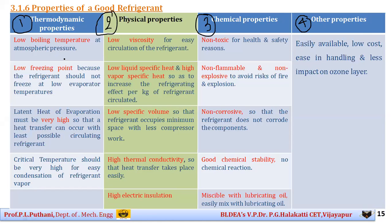When choosing a good refrigerant, you should see that its boiling point is as low as possible at atmospheric pressure. The boiling point of water at atmospheric pressure is 100°C, whereas the freezing point is 0°C. The boiling point of the refrigerant should be as low as possible so that it can extract heat as easily as possible.